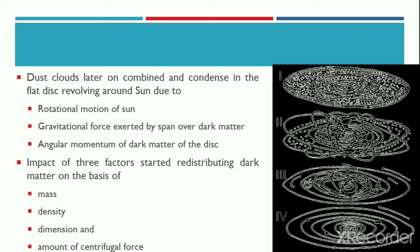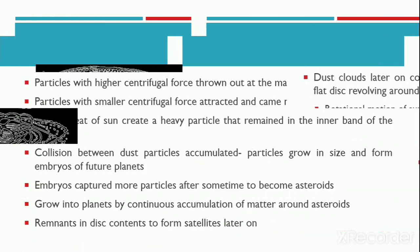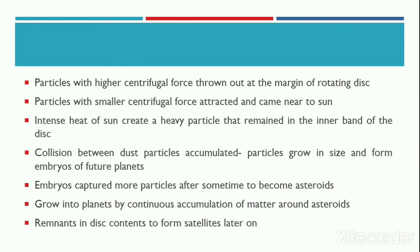Under the impact of these three factors, every particle in the universe started redistributing itself on the basis of mass, density, dimension, and the amount of centrifugal force. The particles having larger centrifugal force were thrown outwards to the margin of the rotating disk, whereas the particles with smaller centrifugal force were attracted towards or nearer to the Sun.